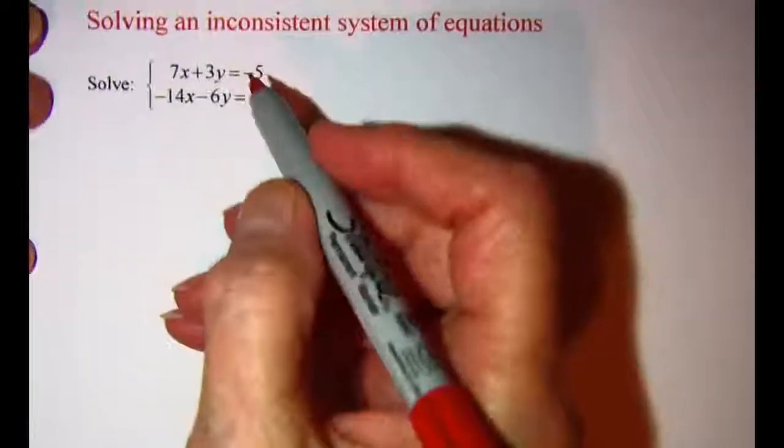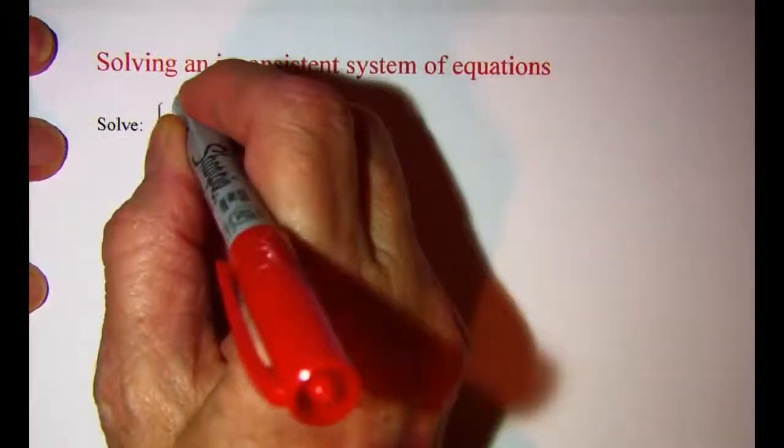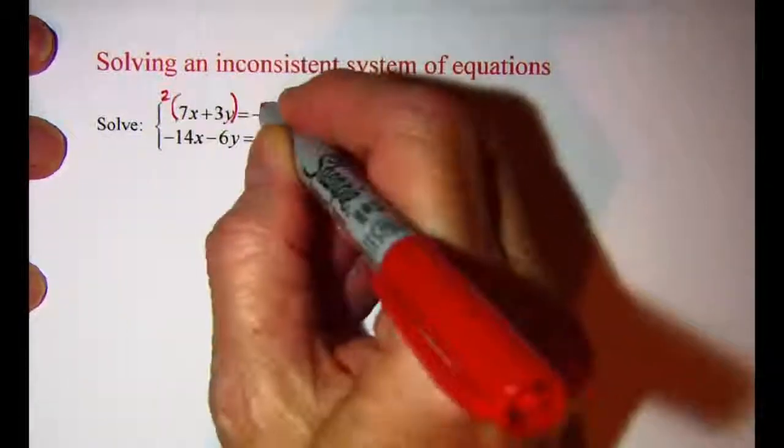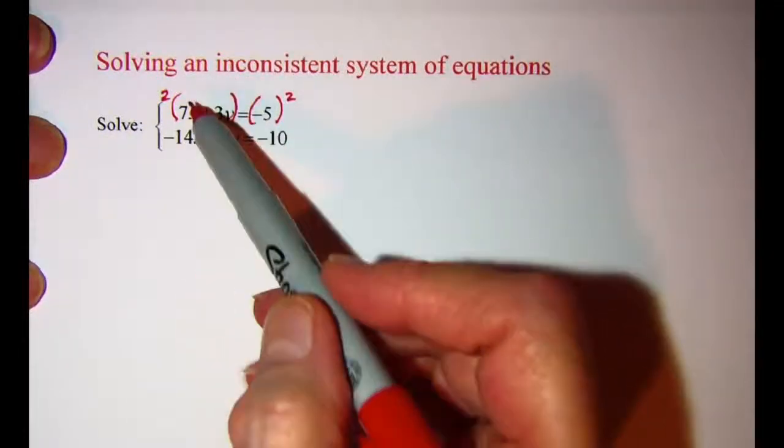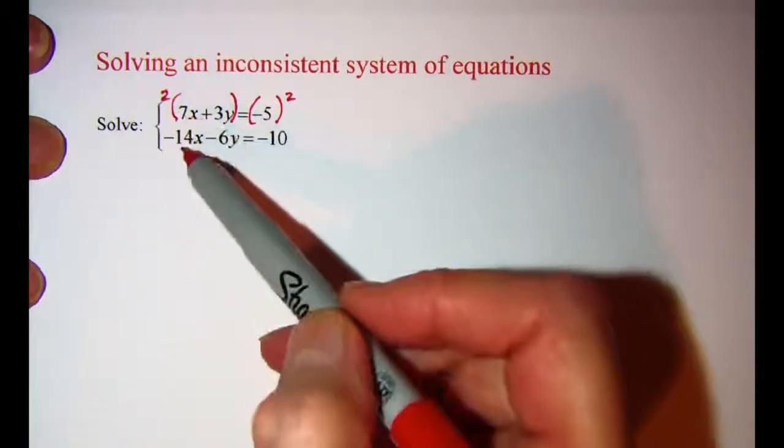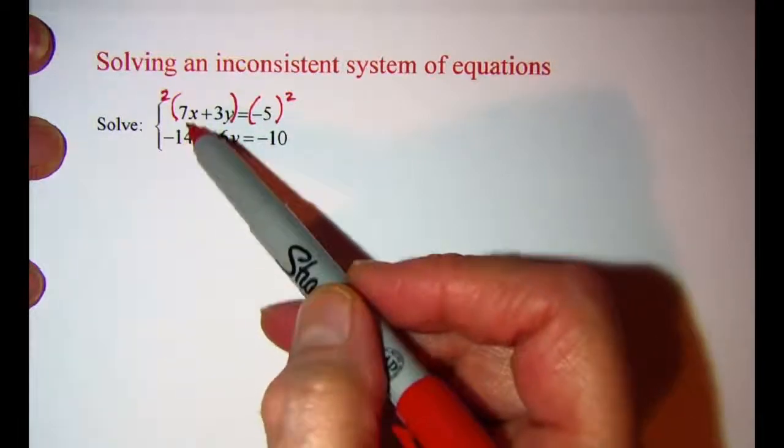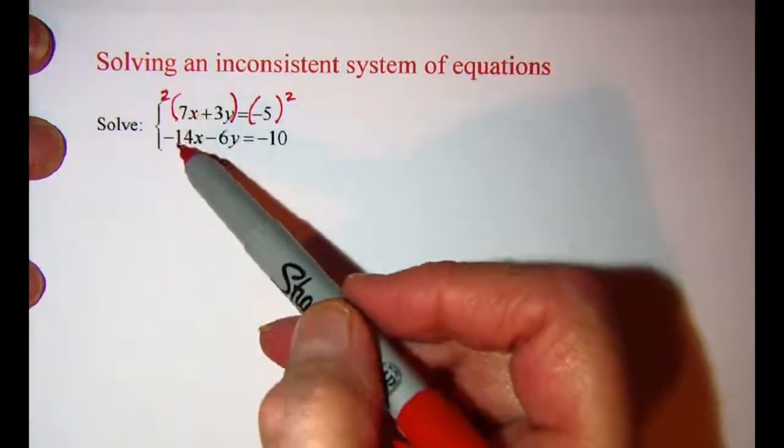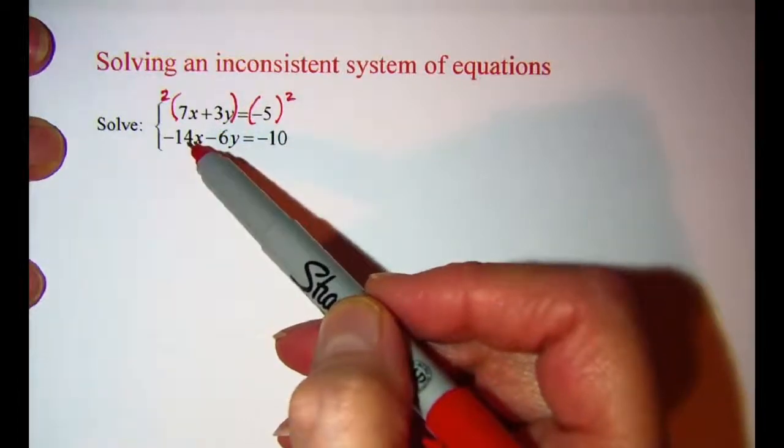I'm going to go ahead and multiply the top equation by 2, and the reason that I'm doing that is so that I can use elimination. This x coefficient will be positive 14 and this x coefficient is negative 14, so that when I add those together I'll have the x terms eliminated.